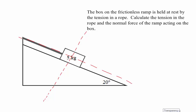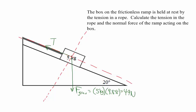If this box is being held at rest, the net force on it is zero, so we need to look at the forces acting on it. One force is gravity, pulling straight down — 5 kilograms times 9.8 m/s² equals 49 newtons. We also have the tension in the rope pulling up the ramp, and the normal force pushing perpendicular to the ramp. This is also why parallel and perpendicular to the ramp was a good choice of axes.